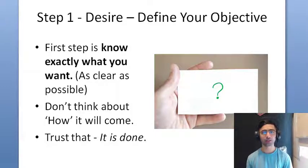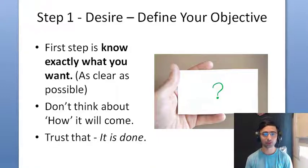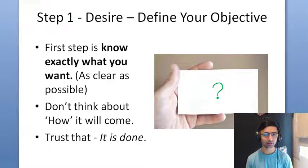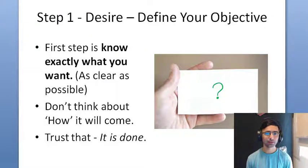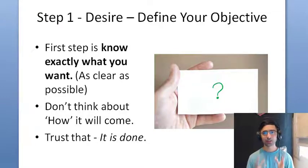Step 1 is desire — define your objective. It is very important, and Neville also mentioned, to be as clear as possible on what you want. Sometimes you cannot be exceptionally clear, but be as clear as possible. If you want a job, be clear on what kind of job and include that detail in your imaginary conversation or visualization. Sometimes you might not have all the details — maybe you want a relationship but aren't sure of every characteristic — but some criteria is okay. Just go ahead with that, and it will help you create it in your 3D world.